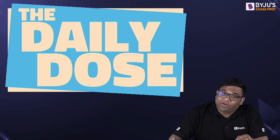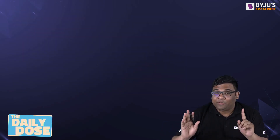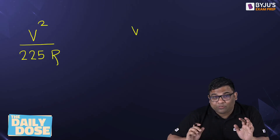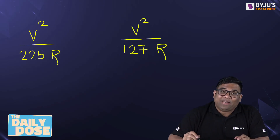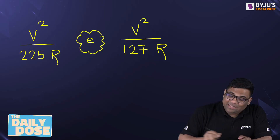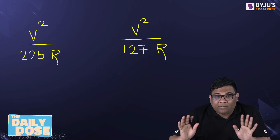Welcome to this daily dose video. Today we will be discussing super elevation. Students are very much confused about two formulas for super elevation in highways: V square by 225R or V square by 127R. We'll clear that particular confusion in this video.